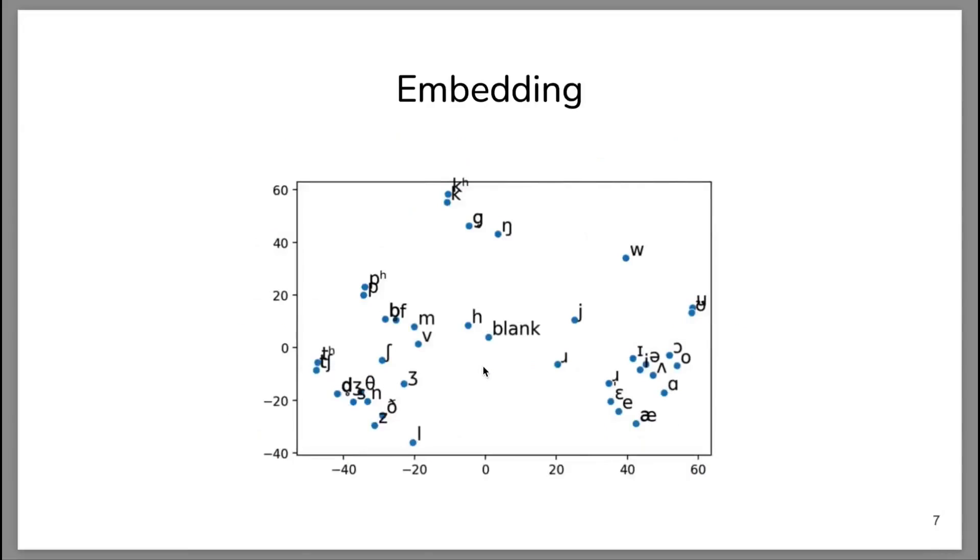Here's a plot of our phone embeddings. We can find many interesting word-to-vector-like relations, such as K and G, P and B, and Q and Zhe pairs. These are unvoiced-voiced pairs, and there are other interesting properties as well.